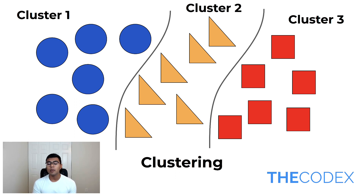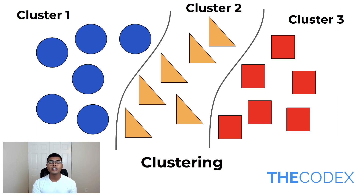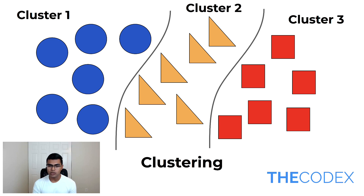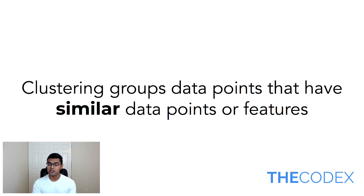Clustering is by far one of the most common ways of implementing an unsupervised machine learning algorithm. In this case, our clustering algorithm found three different clusters: cluster one, cluster two, cluster three. So next time we have a new point, it's immediately going to know which cluster it's part of — is it going to be a blue circle, an orange triangle, or a red square? The definition of clustering is grouping data points that have similar features. So blue circles, orange triangles, and red squares all share similar characteristics and that's why they've been clustered together.